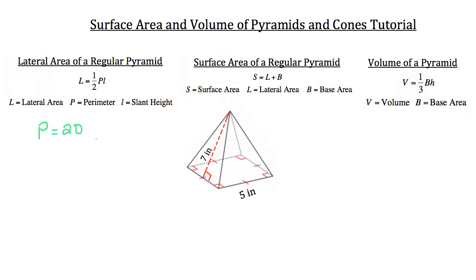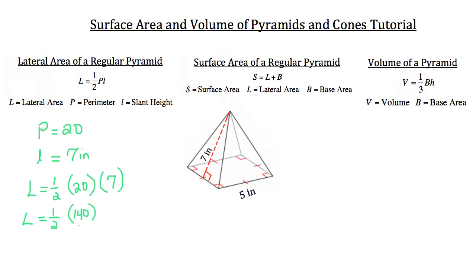The perimeter is four times one side length, and you can see by the red congruency tick marks that it is a square — all four side lengths are the same. Now that we have the perimeter and the slant height of seven inches, we can solve for the lateral area: one-half times 20 inches times 7 inches. 20 times 7 is 140, and half of 140 is 70, so our lateral area is 70 inches squared.